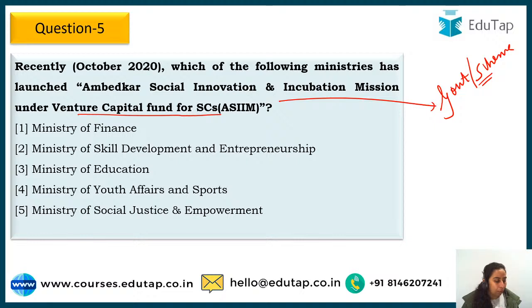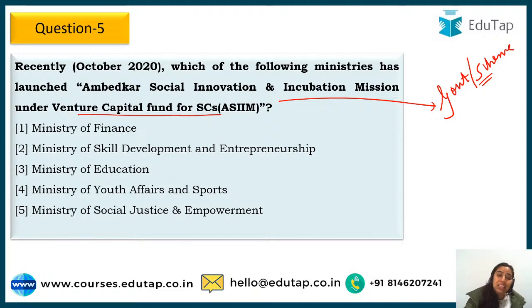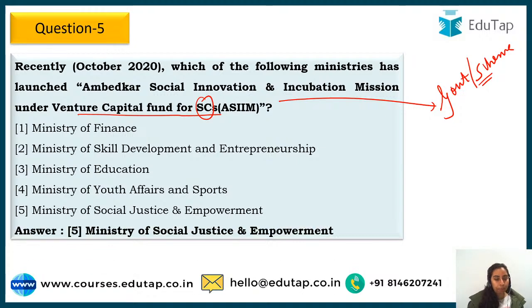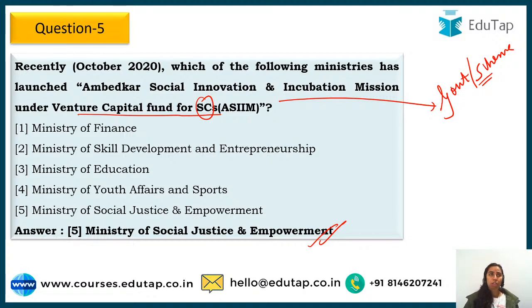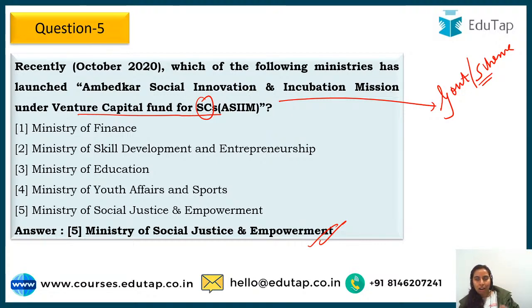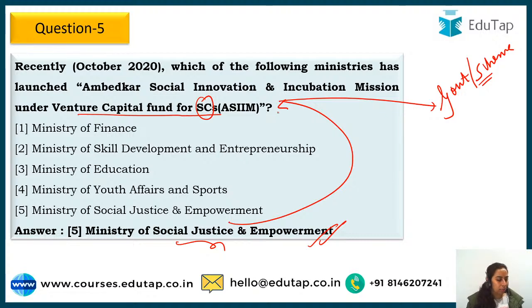The answer is the Ministry of Social Justice Empowerment — easy to remember. It is an incubation and social innovation mission for Scheduled Castes, so it relates to societal justice. Minister Thawarchar Gehlot launched it. ASIM promotes entrepreneurship among SC youth with special preference to Divyaang (persons with disabilities). It will support innovative ideas until 2024 through synergistic work with technology businesses, hand-holding start-up ideas till they reach a commercial stage.